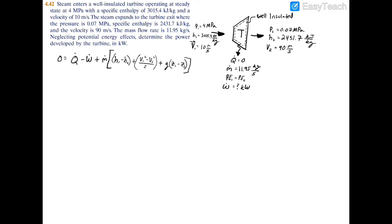Now we're told that this is well-insulated, so once again we can cancel out our heat transfer, and then we're told that we're going to neglect potential energy, so we can go ahead and cross out the back end there as well.